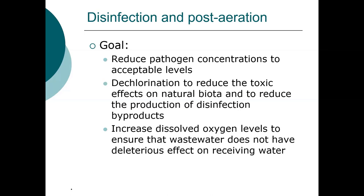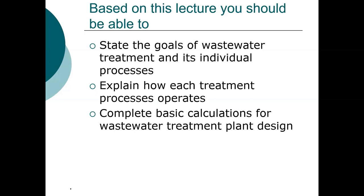We also want to reduce contact time to avoid disinfection byproducts. Because of those byproducts and the need for both chlorination and dechlorination stages, you're seeing far more plants switch to UV disinfection. Lastly, we often increase the dissolved oxygen levels — often a cascading stream aerates the water so there isn't a significant reduction in dissolved oxygen when it mixes with the receiving water body. Based on this series of lectures, you should be able to state the goals of wastewater treatment and its individual processes, explain how each treatment process operates, and complete a basic set of calculations for wastewater treatment plant design.